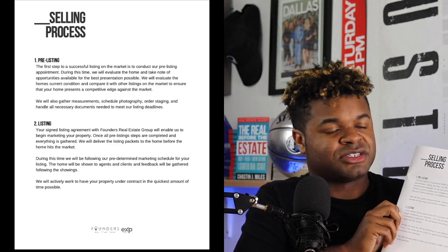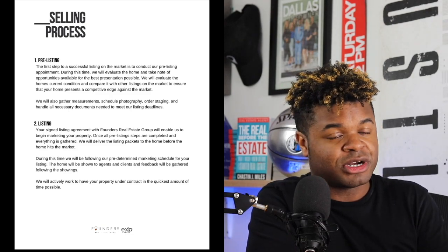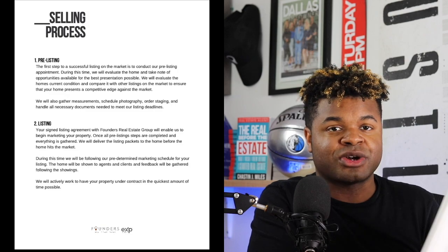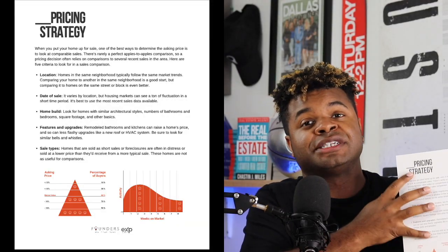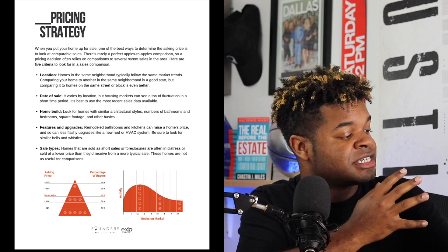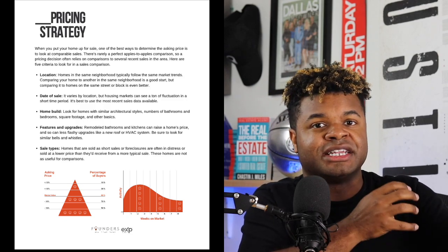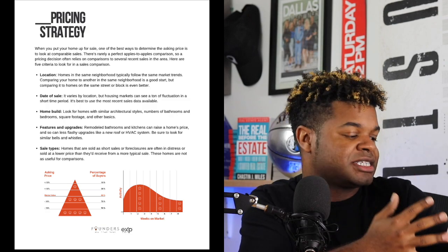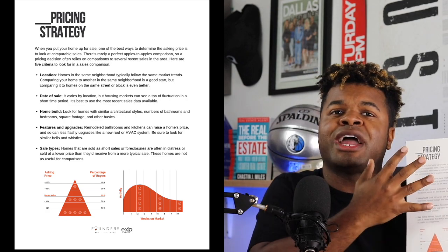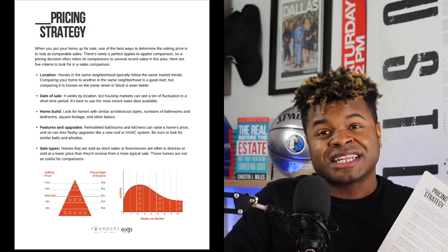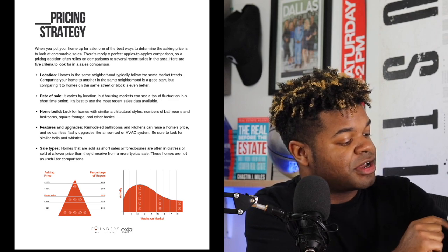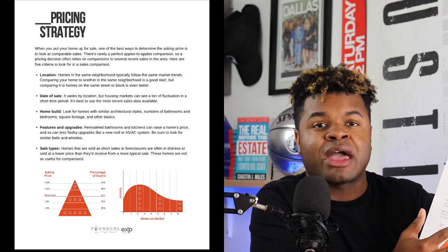Now we're getting into the selling process — I talk about the pre-listing portion, then the listing portion, under contract, pending, and then closing. Our last page is the pricing strategy: how we should price the home. I cover location, date of the sale, when the home was built, upgrades, and different sale types like investments or auctions. I also talk about pricing strategy — if we price high, fewer people come; if we price low, we can get a lot of offers but may not get full market value. Then I cover activity and days on market.